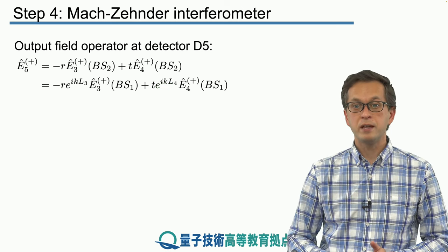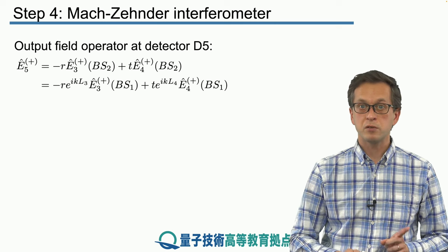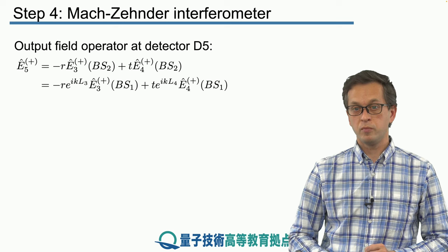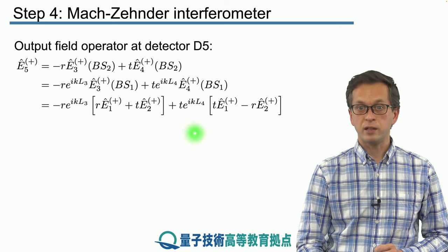We also know how E3 and E4 at beam splitter 1 transform as functions of E1 and E2, the input mode operators. So we substitute and we get the following.